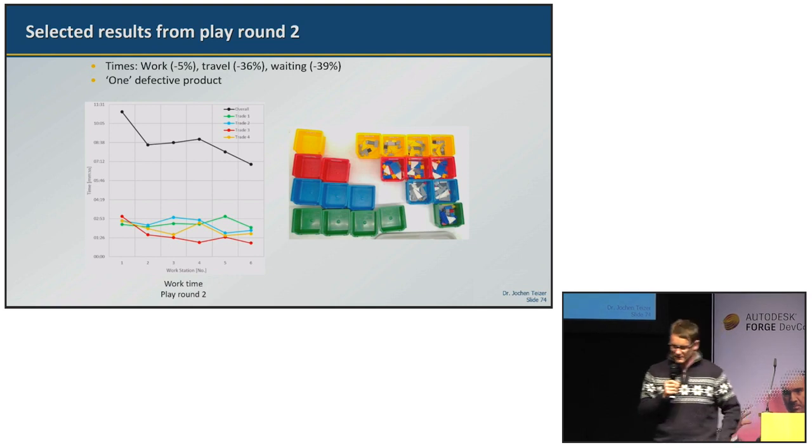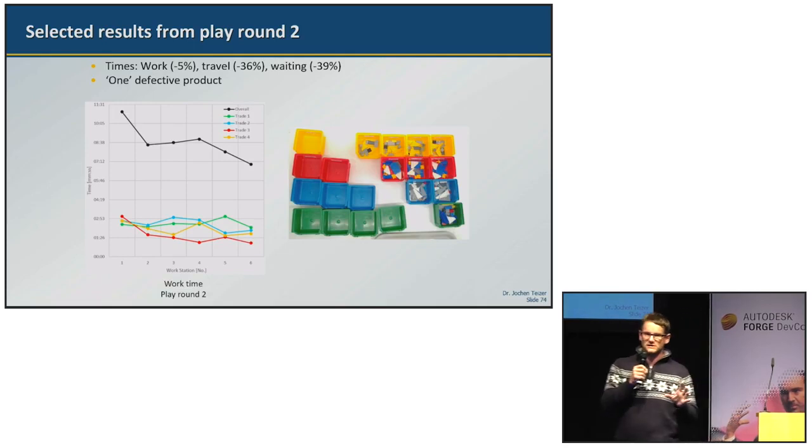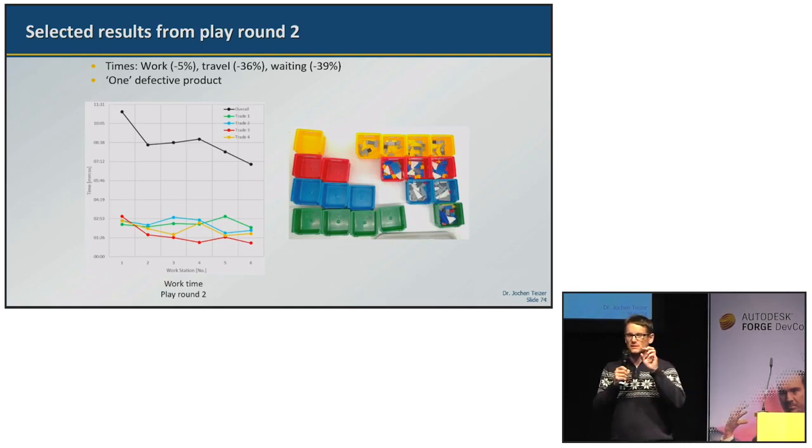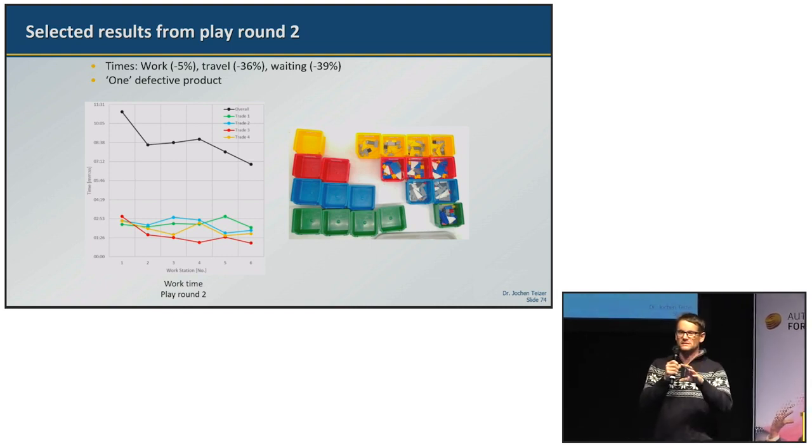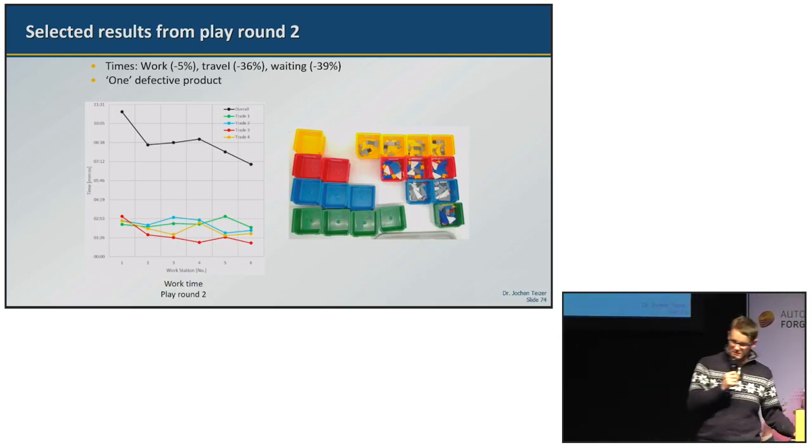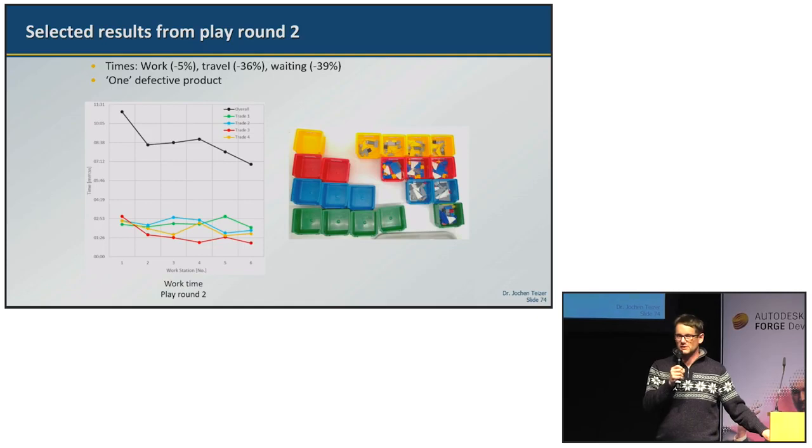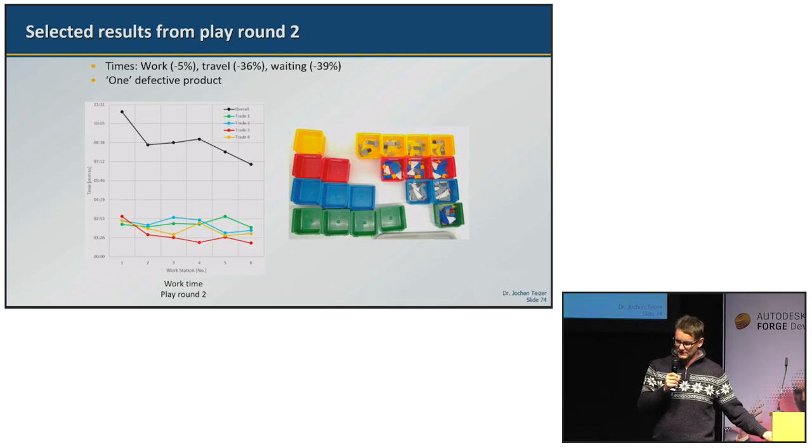Here we see the work time in play round two. We measured that IoT gives a productivity improvement of about five percent while reducing travel and waiting times. The reason is the Forge visualization allowed us to see where the center of gravity of the work actually has been, and that allowed the trades to relocate the warehouse to that center of gravity. So that was the way how they reduced travel and waiting times. There was by the way just one defective product versus in the first round all planes had a defect.